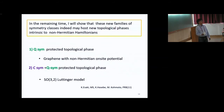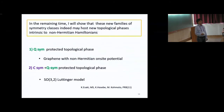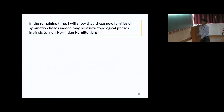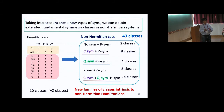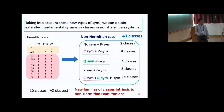Audience question: All the 43 symmetry classes are for non-interacting, non-Hermitian Hamiltonians? Speaker: Yes, I assume no interactions — we only consider matrix Hamiltonians. I'm not sure about the interacting cases; I only know the non-interacting case.